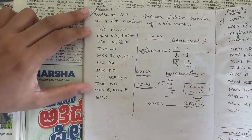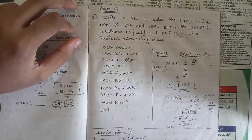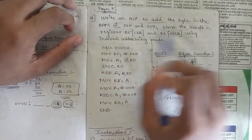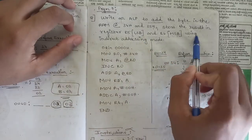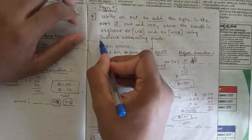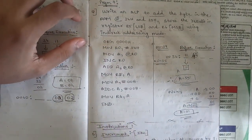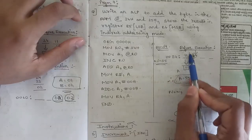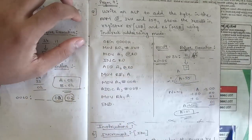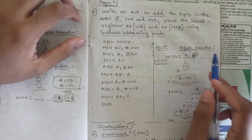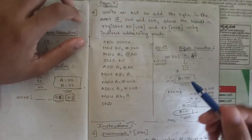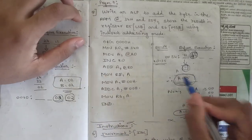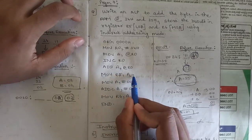The next program is for addition: write an ALP to add the bytes in RAM locations 34H and 35H and store the result in register R5 as LSB and R6 as MSB, using indirect addressing mode. So: ORG 00H, MOV R0, #34H. Whatever value is at the 34H location, move it to A (the accumulator). Then increment R0 so R0 becomes 35H. Then ADD A, @R0 — add whatever is at R0 with A. For example, 44H plus 11H gives 55H, and we move that result to R5: MOV R5, A.